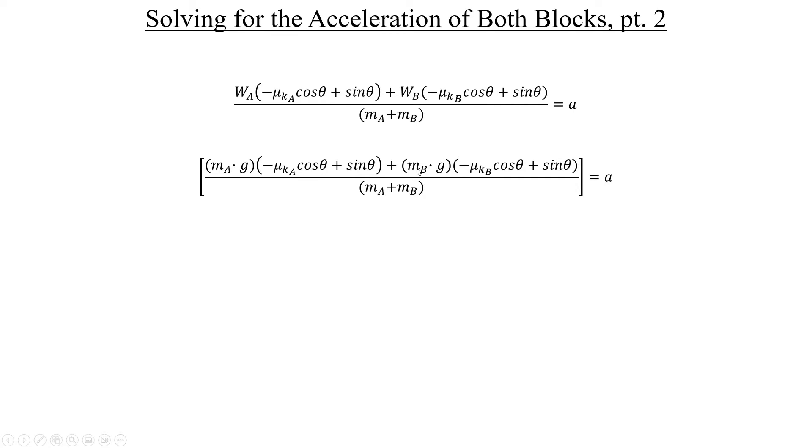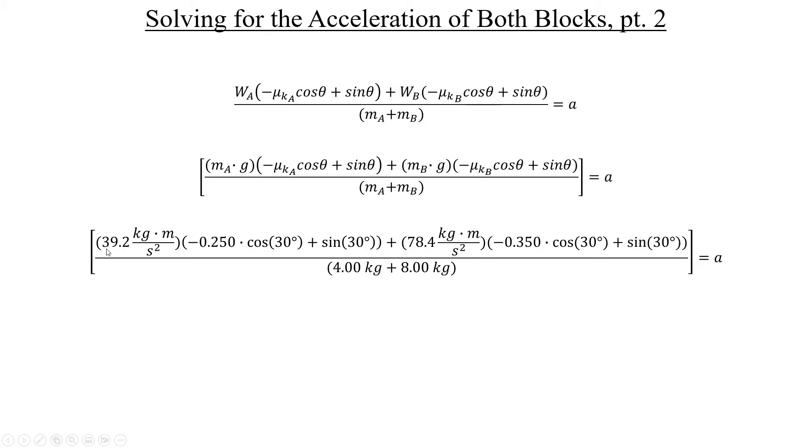Next, what I'm going to do is I'll be taking those values, so 4 times 9.8 and 8 times 9.8, and plugging them in here, so those result in 39.2 and 78.4 respectively. Notice the units, it's kilogram meter per second squared. And now what we want to do is we want to take those values and multiply them by the sum of the trig identities that we have in these parentheses in the numerator. And once we do that, finally, we add the numerators and divide them by the sum of masses in the denominator, resulting in the following acceleration for both blocks. This is our answer to part A.